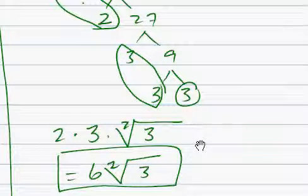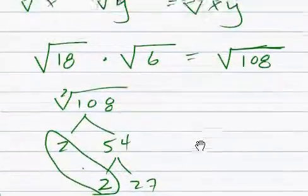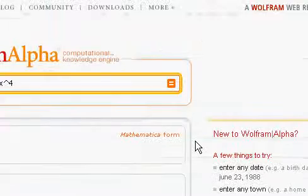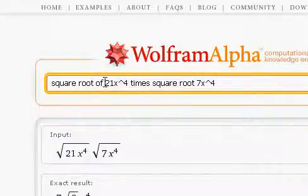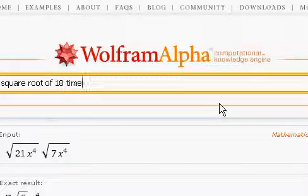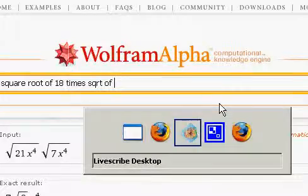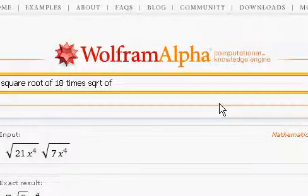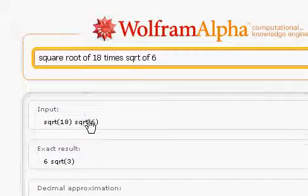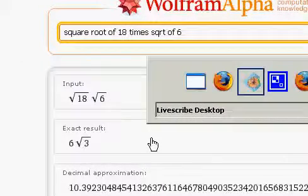And let's take that same problem to Wolfram Alpha. See what it does with it. Pretty straightforward. Square root of 18 times square root of 6. There's the equation. And the result is 6 square root 3,